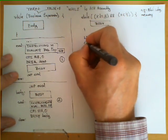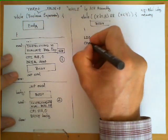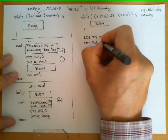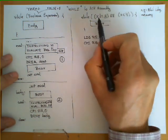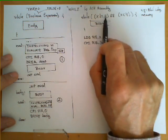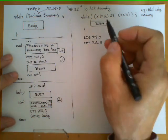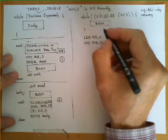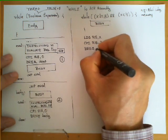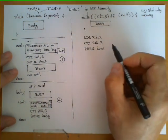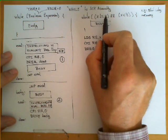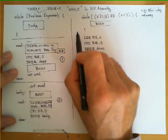Next we need to evaluate the first sub-expression, so we compare R18 with the constant 3: CPI R18, 3. Since this is a conjunction, if this first sub-expression is false we can immediately jump out of the loop. This sub-expression being false is equivalent to x equaling 3, so we branch if equal — BREQ — to done. This conditional branch means: if x equals 3, this sub-expression is false, so get out of the loop.